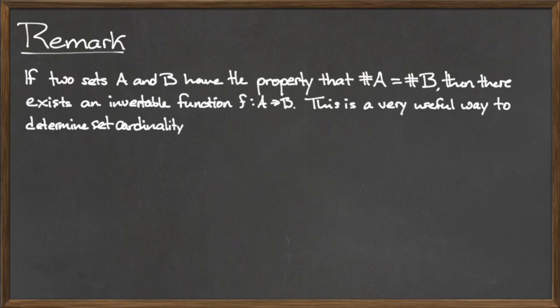In other words, two sets A and B have the same cardinality if we can map every element in A to a unique image in B, and we can map every element in B to its unique preimage in A.